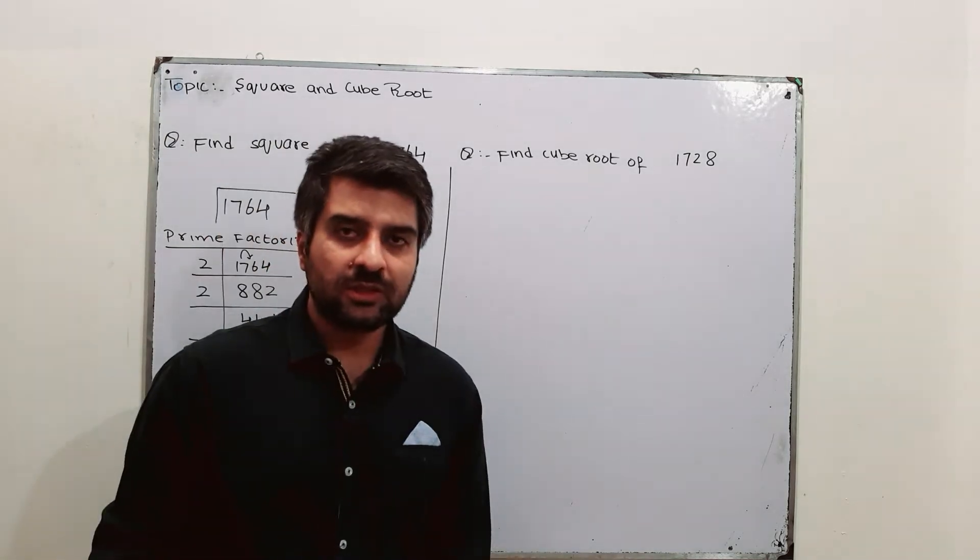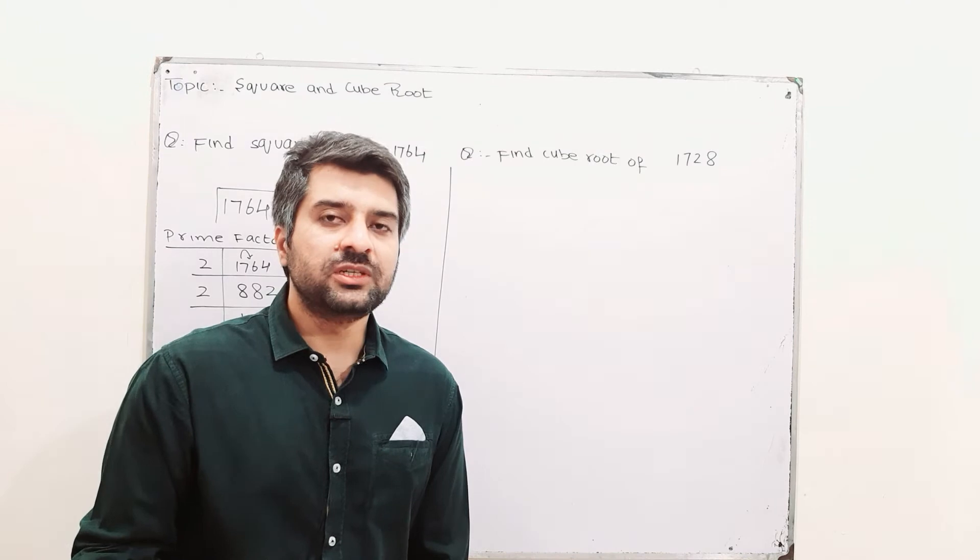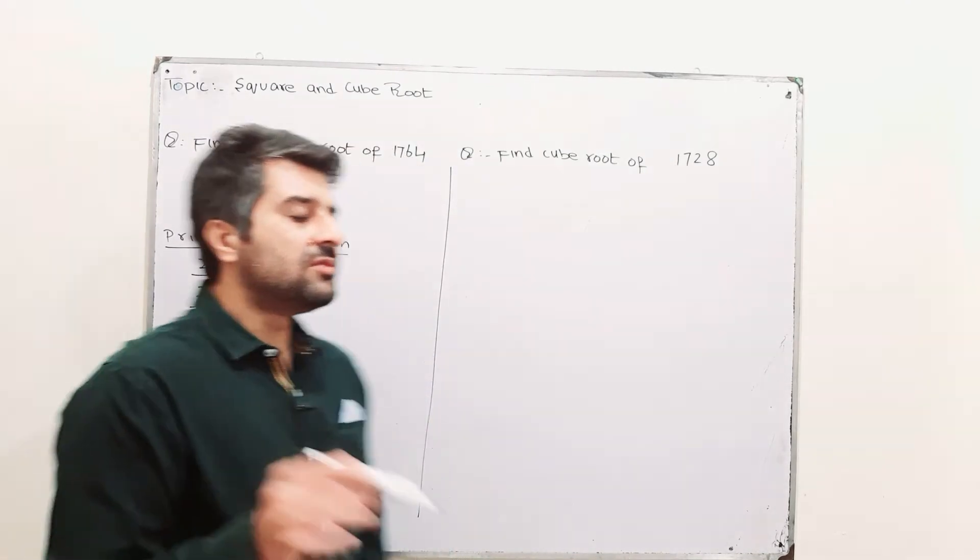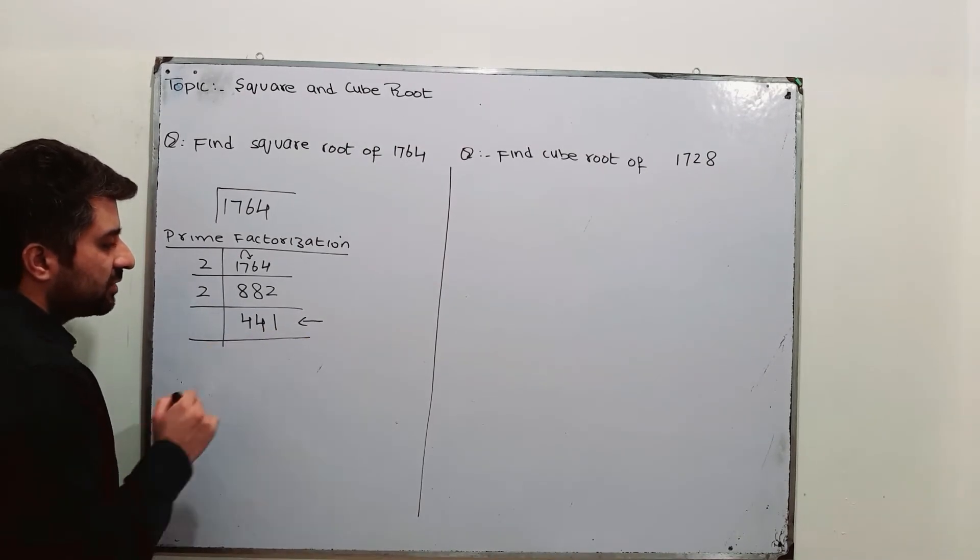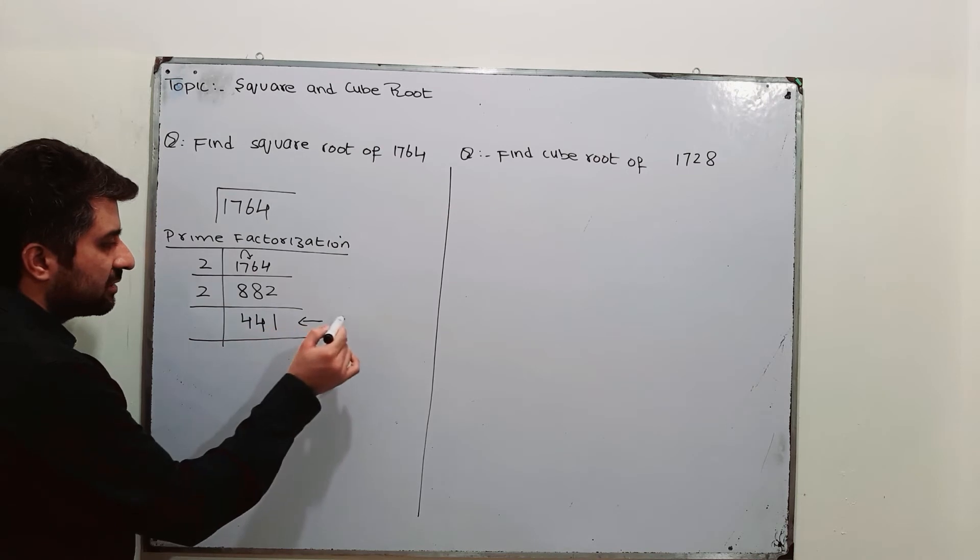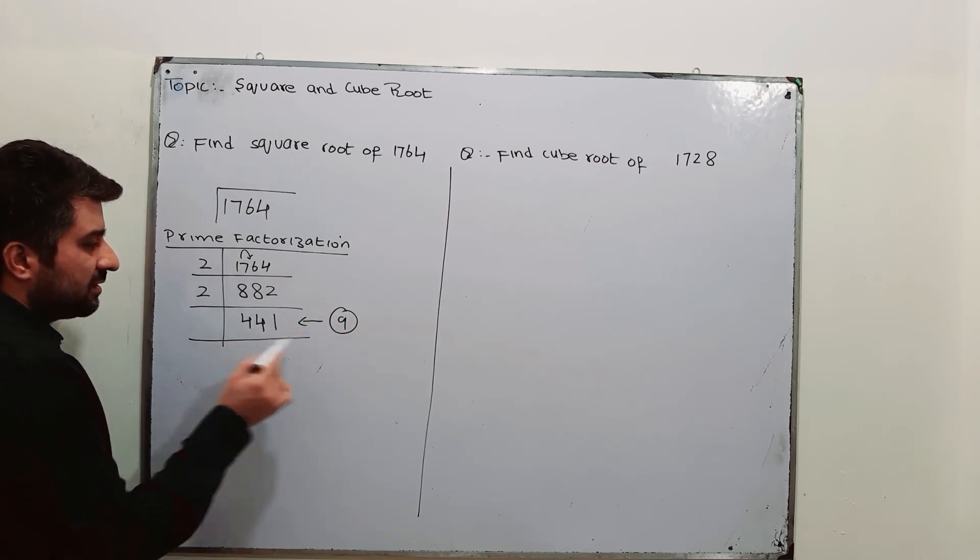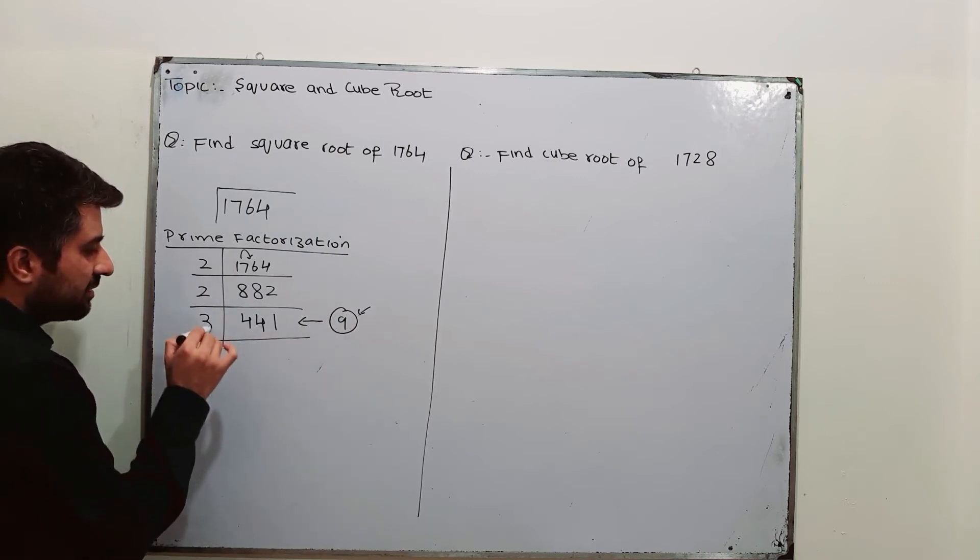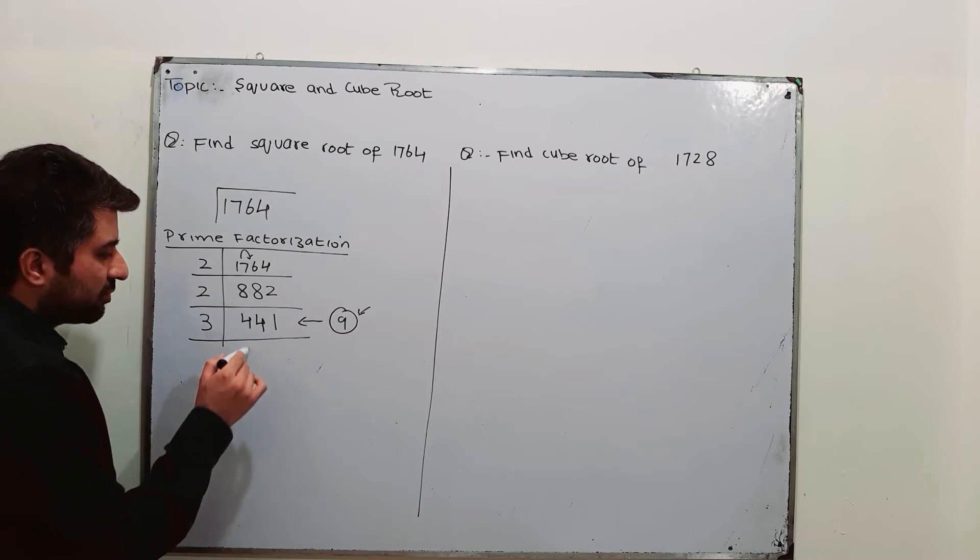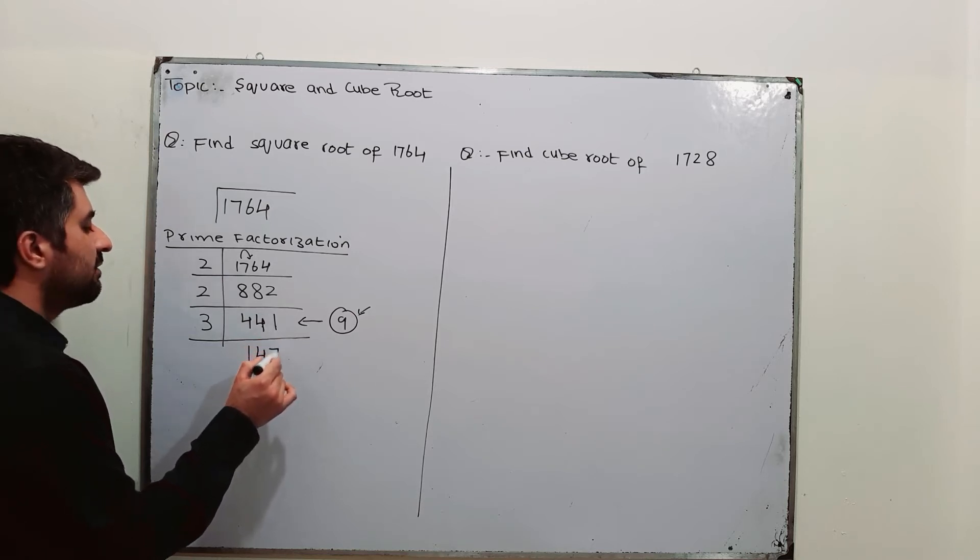However, it is divisible by 3 as we have studied that if you will add all these 3 digits, 4 plus 4, 8 plus 1, the addition is 9. Sum of this digit is 9. 9 can be divisible by 3. Hence, this number can be divisible by 3. So, 3, 1 times 3, 1 will be carried to the next digit. It will become 14. 3, 4 times 12. 2 will be carried to the next digit. It will become 21. 3, 7 times 21.